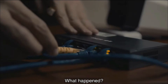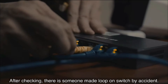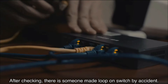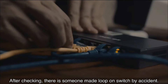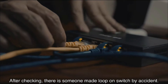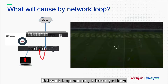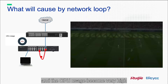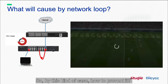What happened? After checking, there is someone who made a loop on the switch by accident. Network loop occurs, internet is lost, and CPU usage becomes very high. So, by this kind of case, how do we prevent it?